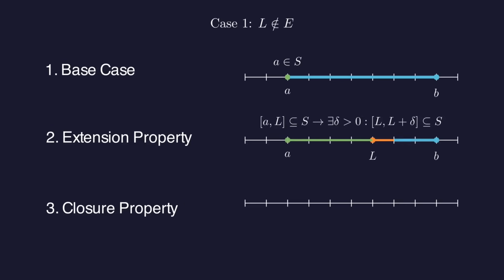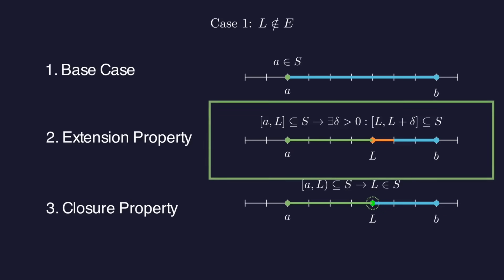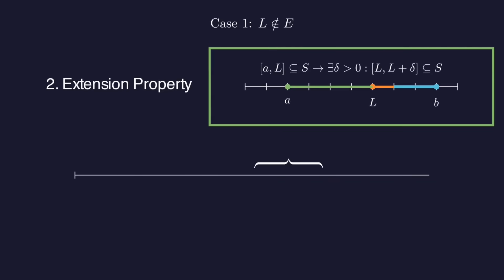That means that every number from A up to and including L is in our set S and we can therefore use the extension property. This says that we can find some delta so that all the points from L to L plus delta are also in S.